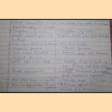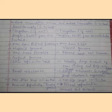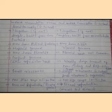Prokaryotes have a haploid genome (N) and a compact genome. They may have plasmid DNA. Eukaryotes have a diploid genome, and plasmid DNA is not common in eukaryotes.